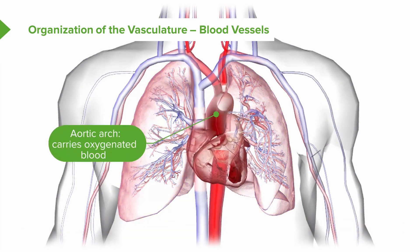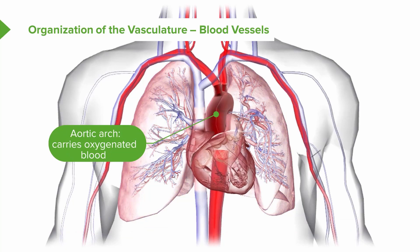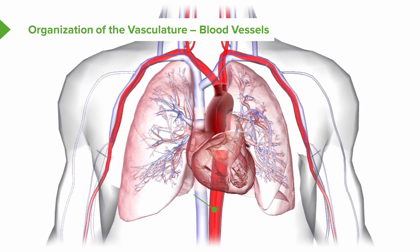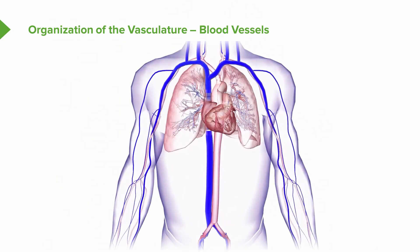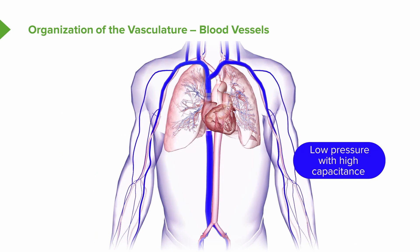The aortic arch, the aorta, is bringing blood out of the left ventricle, squeezed at 120 millimeters of mercury, and going out and perfusing the entire body — going out through the descending aorta and into the lower organs, but also perfusing head and neck and the vessels of the upper extremities. An important conceptual point: veins are low pressure and have very high capacitance. About two-thirds of the total blood volume lives in the veins at any particular moment in time.